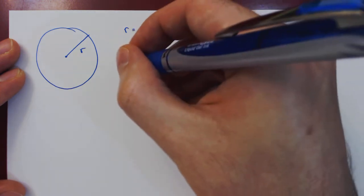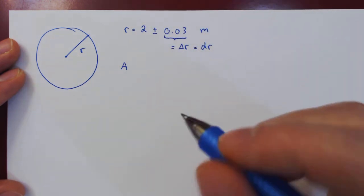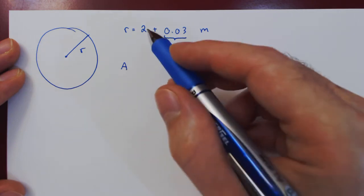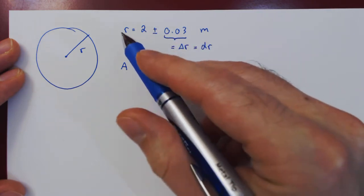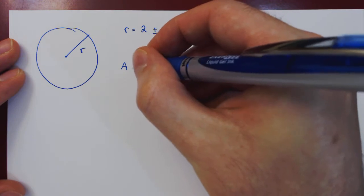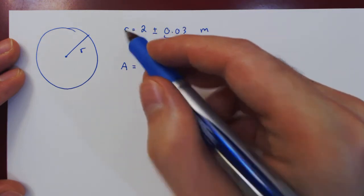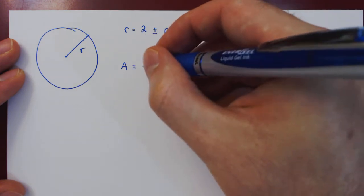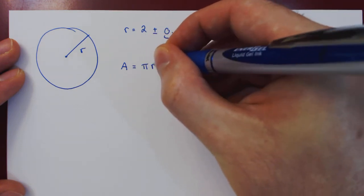Now let's find the area of the circle with uncertainty. First we'll find the value of the area using the value of the radius. What is the connection between the radius of a circle and the area of the circle? The connection is that A equals pi r squared.